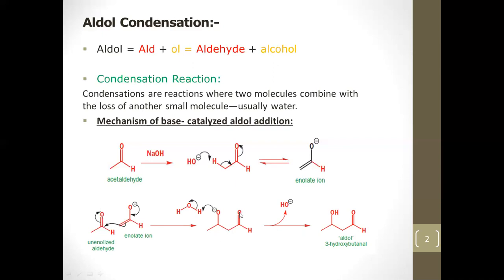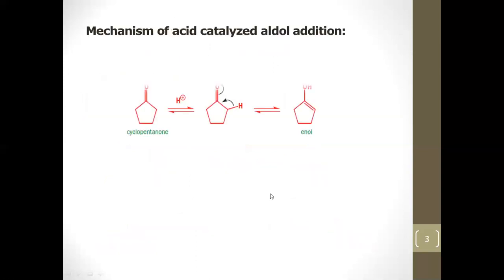The intermediate formed has a negative charge, which is unstable. It snatches a proton from water, hydroxide is eliminated, and the aldol product is formed. It is called 'aldol' because it contains both an alcohol and an aldehyde group. Hydroxide was the catalyst — it was used and recovered chemically unaltered.